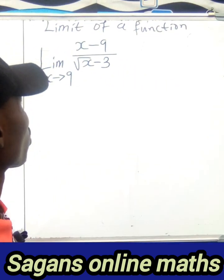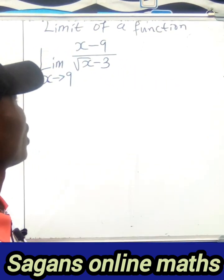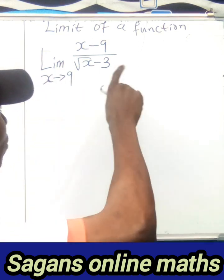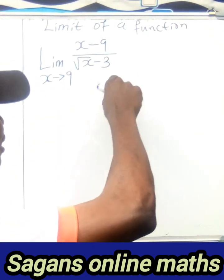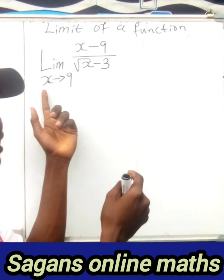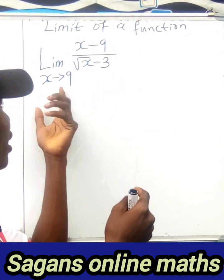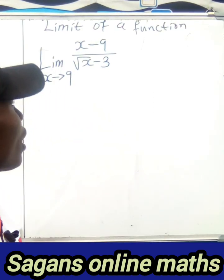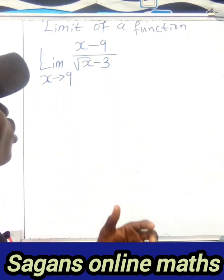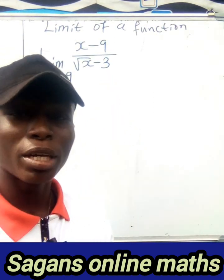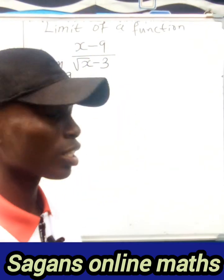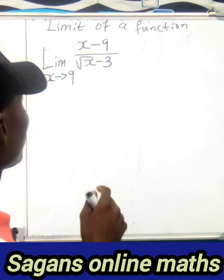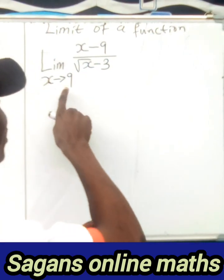Let's consider this question on the board. We are given the limit of a function: the limit of (x minus 9) divided by (square root of x minus 3), where x tends to nine — that is, x approaching nine.